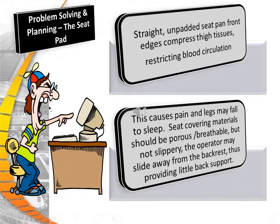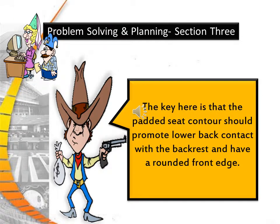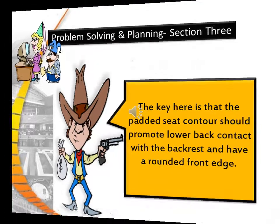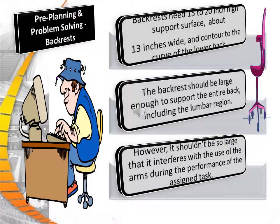Seat covering materials should be porous and breathable but not slippery, as the operator may slide away from the backrest providing little back support. The padded seat contour should promote lower back contact with the backrest and have a rounded front edge. Backrests need a 15 to 20 inch high support surface about 13 inches wide, contoured to the curve of the lower back. The backrest should be large enough to support the entire back including the lumbar region, but not so large that it interferes with use of the arms during the task.